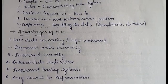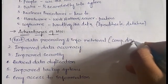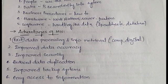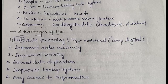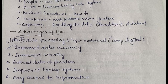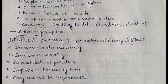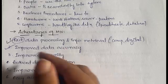The first advantage is fast data processing and information retrieval. Since MIS is a computerized, digital process and not manual, everything is automated, so fast data processing and retrieval can be done. The second advantage is improved data accuracy — when doing calculations manually there is a probability of mistakes, whereas with a computerized system the probability of mistakes is very low and things happen faster.